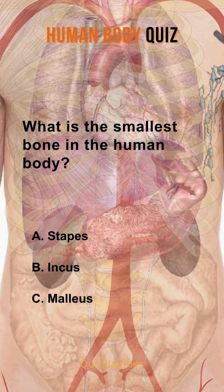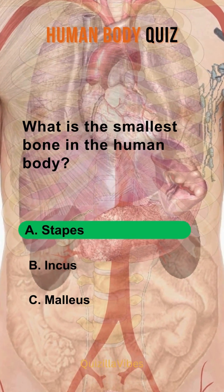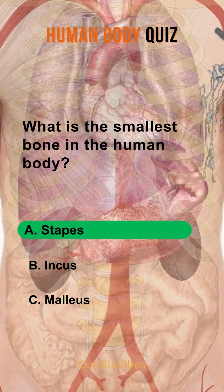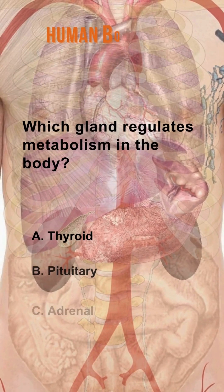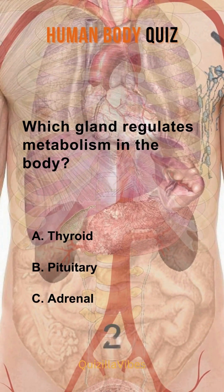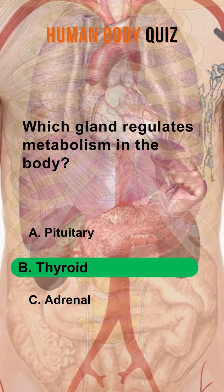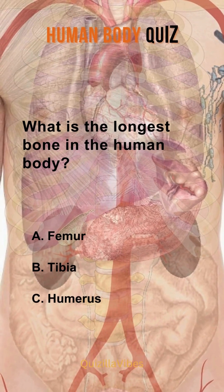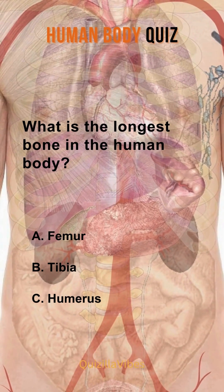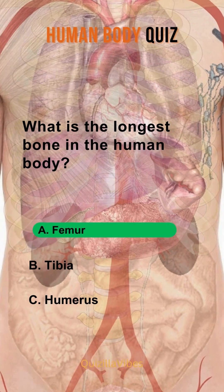What is the smallest bone in the human body? Stapes. Which gland regulates metabolism in the body? Thyroid. What is the longest bone in the human body? Femur.